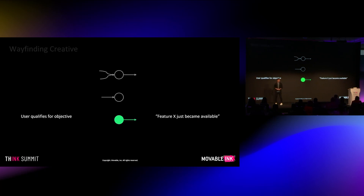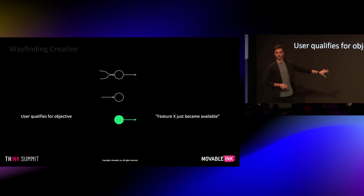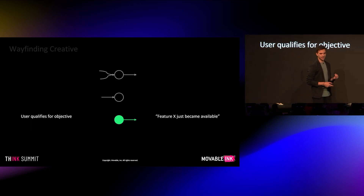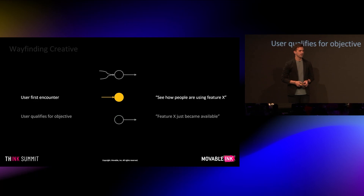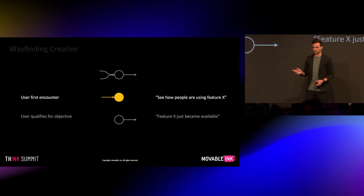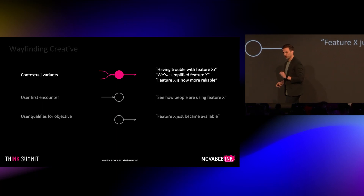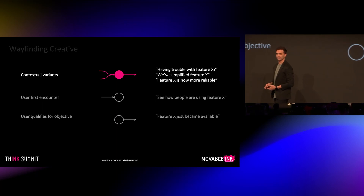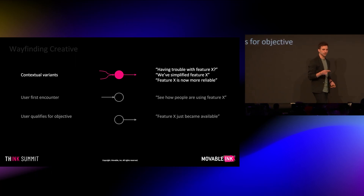The third area is wayfinding creative. A user qualifies for an objective — think of this as a product announcement or a flash sale. We've developed our creative, we've got our audience, we're going to batch and blast. The second type is the first time a user actually encounters a feature — it just became available to them. Maybe they finally arrived at a particular landing page, so we want to send additional communications. This is a great opportunity to do testimonials or value props. My favorite is the contextual variance — this is where you stop and consider your map, understanding all of the places a user could have come from to arrive at this point. Instead of continuing to create new campaigns, you start looking backwards.